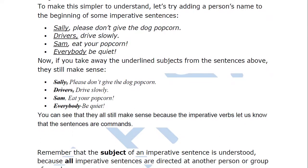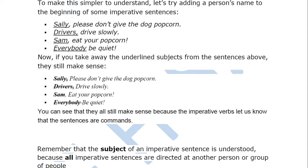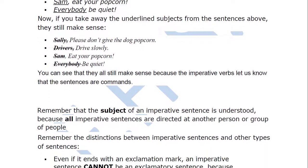To understand this better, let's try adding a person's name to the beginning of every imperative sentence. For example: 'Sally, please don't give the dog popcorn.' 'Drivers, drive slowly.' 'Sam, eat your popcorn.' 'Everybody, be quiet.' Now if you take away the subject — the name of the person — it still makes sense: 'Please don't give the dog popcorn.' 'Drive slowly.' 'Eat your popcorn.' 'Be quiet.' The imperative verb lets us know these are commands.